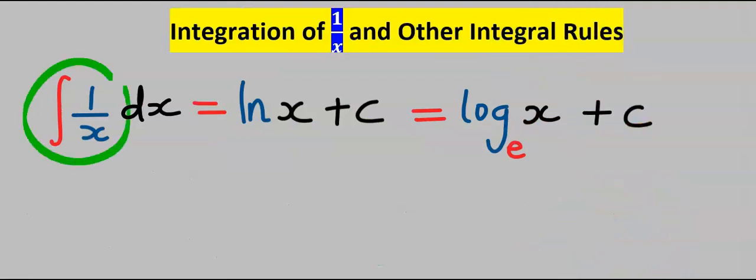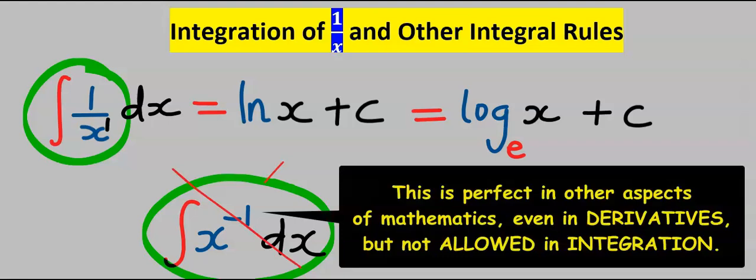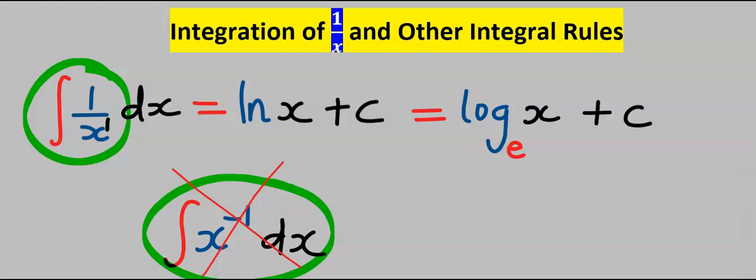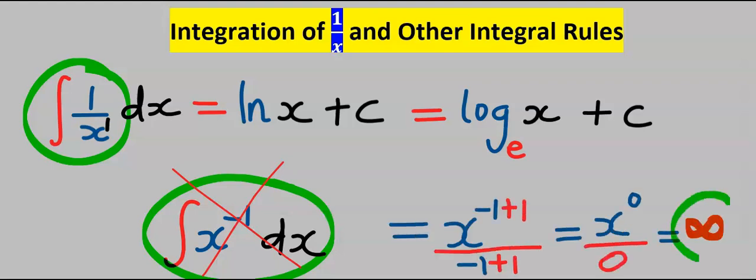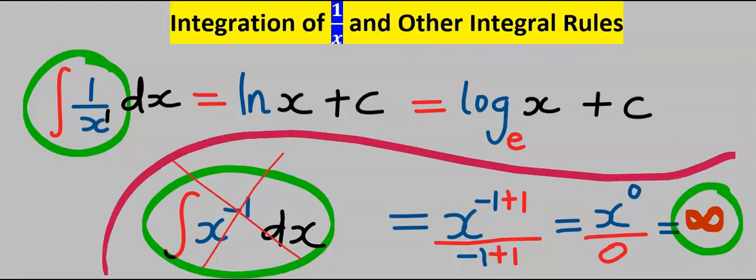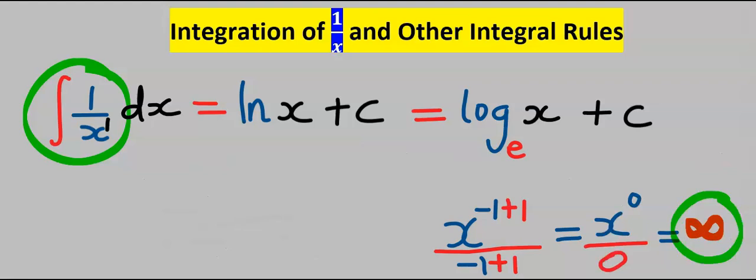However, when considering the integral of one over x, because the highest power here is one, you are not allowed to do this. It doesn't exist in integration because this becomes undefined. It does not exist. This is one big error, mistake, and confusion for beginners in integral calculus. Just remember that this does not exist.